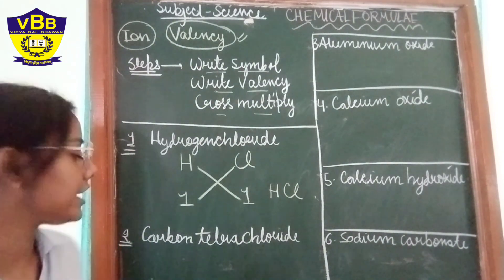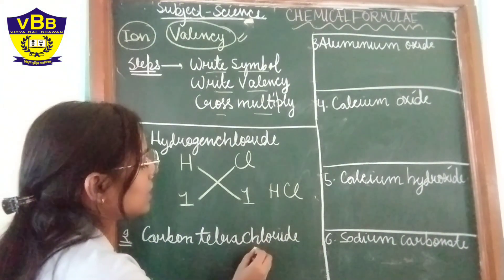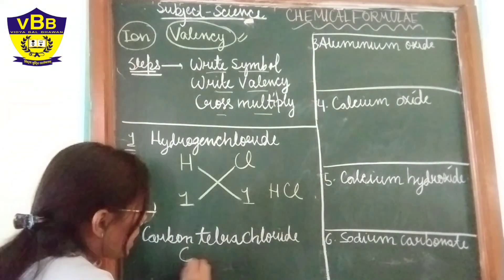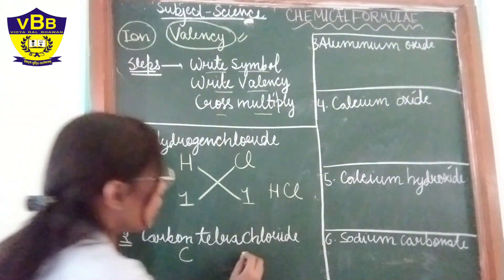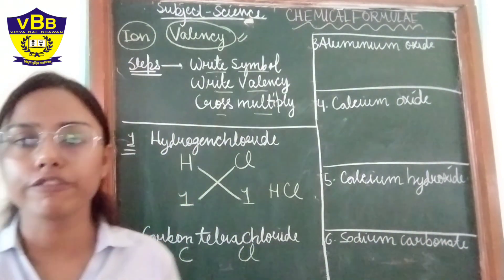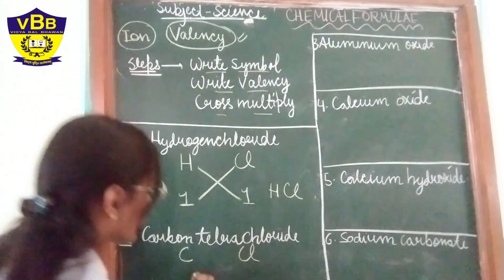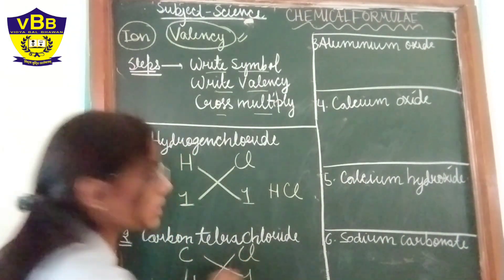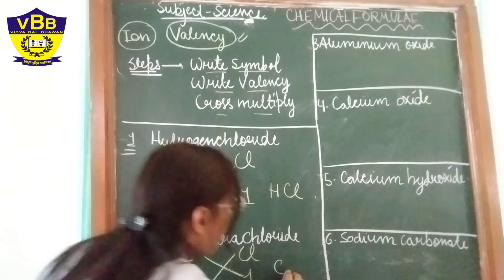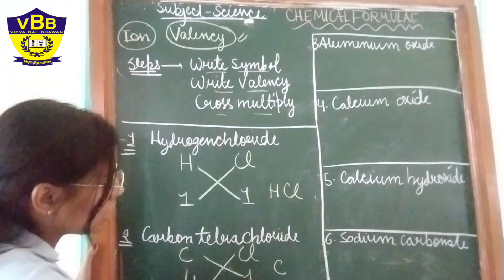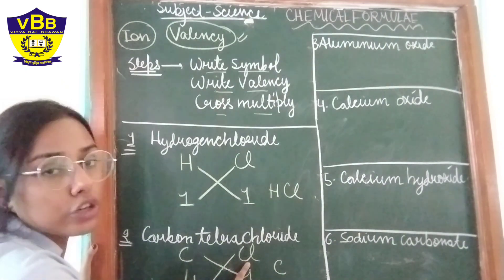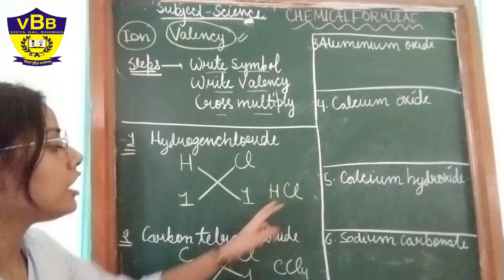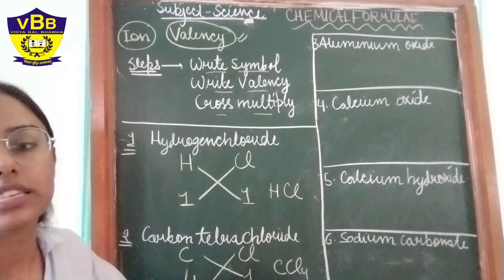Now let's take another example — carbon tetrachloride. The elements are carbon and chlorine. The valency of carbon is 4 and the valency of chlorine is 1. When we cross multiply, we get 1 carbon and 4 chlorines, so we write 4 at the base of chlorine. The formula is CCl4.